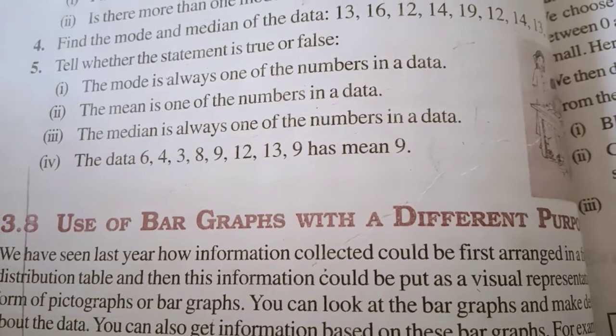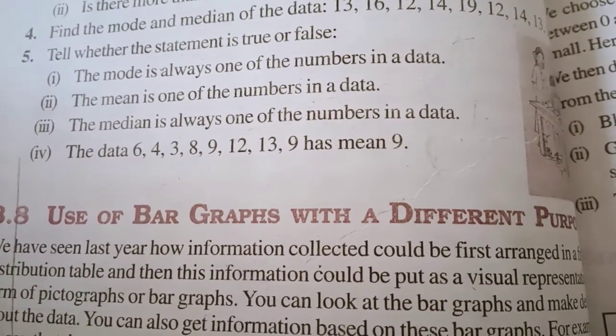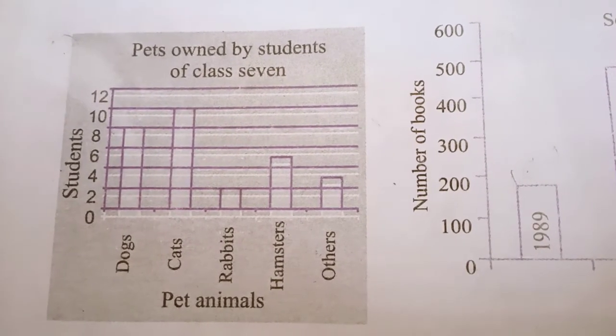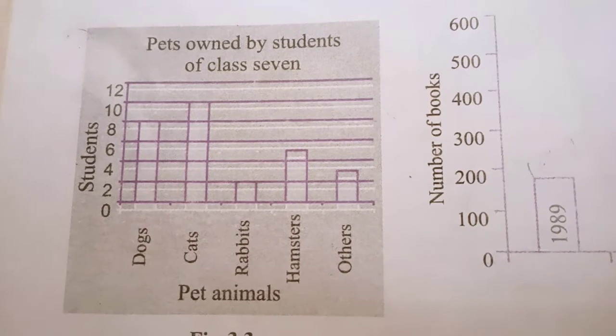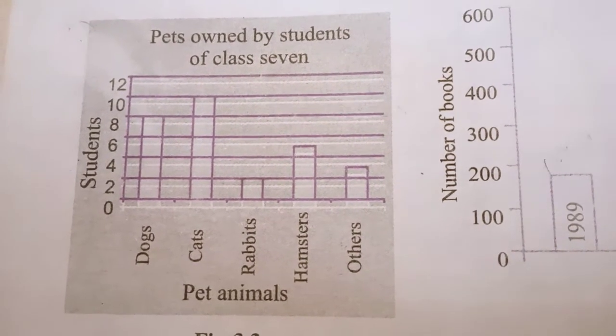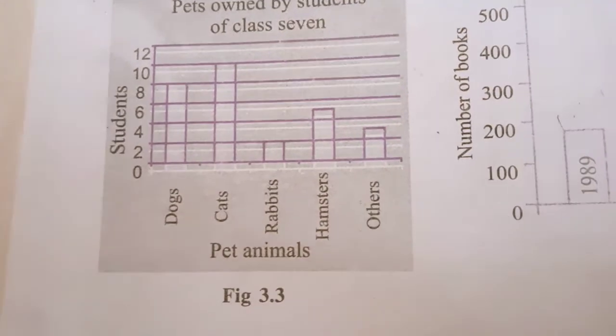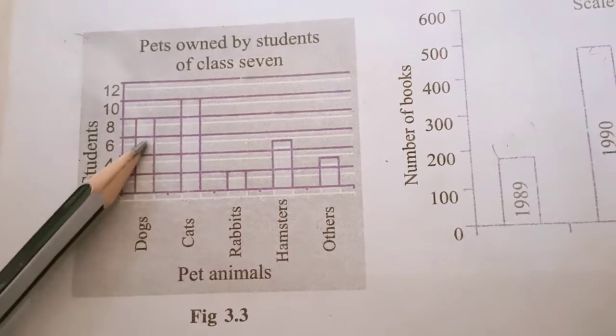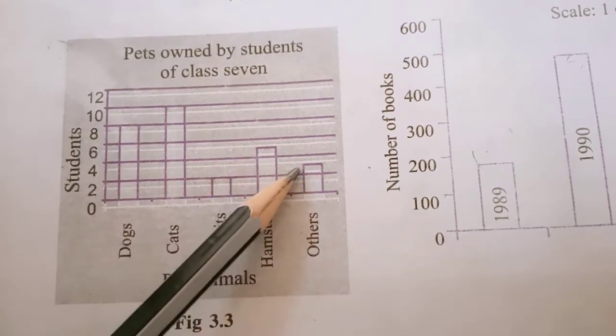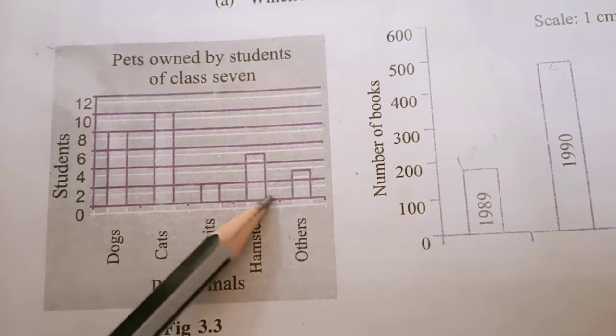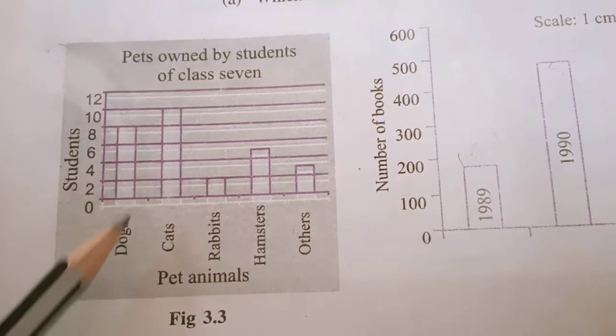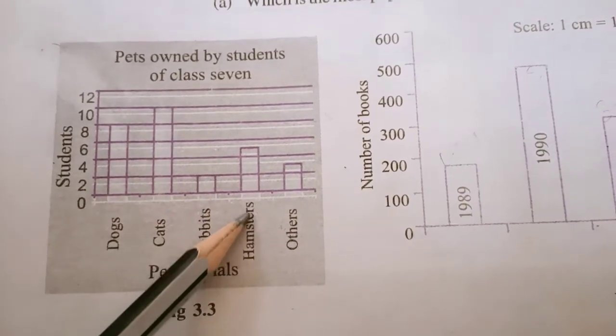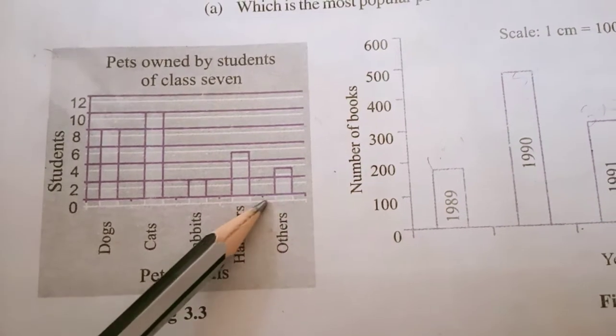Today I am explaining you use of bar graphs with different purposes. See page number 72 of your textbook NCERT. This is one example of bar graph. See how many bars are there - we count 1, 2, 3, 4, 5. These vertical rectangular columns are the bars. First represented dog, second is cat, third rabbit, fourth hamster and others.